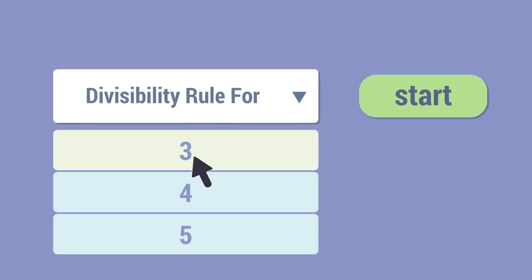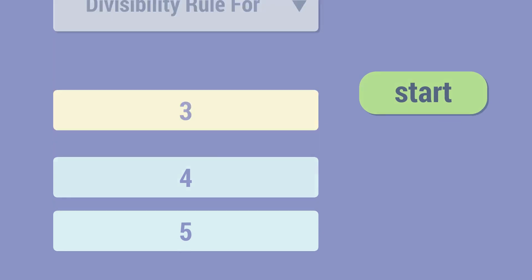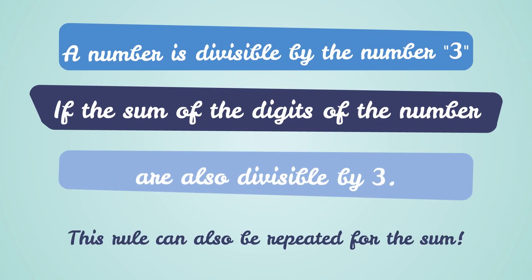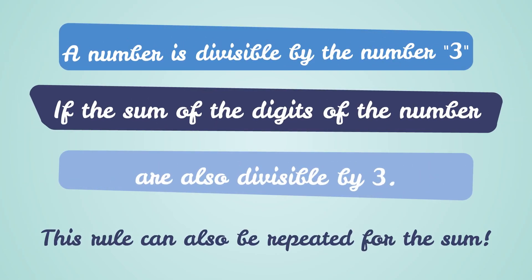Let's now look at the divisibility rule for 3. A number is divisible by 3 if the sum of the digits of the number is also divisible by 3. We can also repeat this rule if needed.